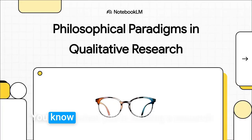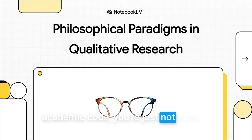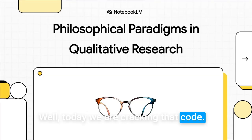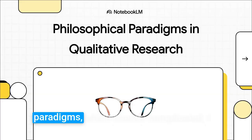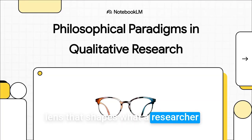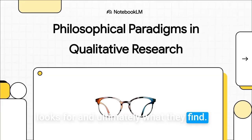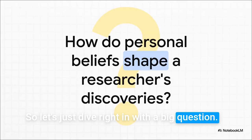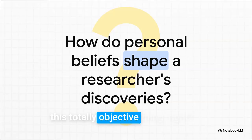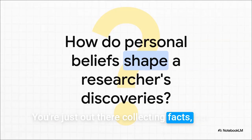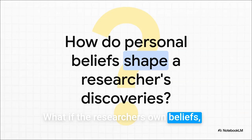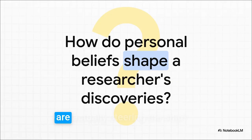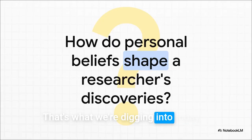Hey, welcome to The Explainer. You know when you're reading a research paper and it feels like there's this secret academic code you're just not in on? Well, today we are cracking that code. We're going to talk about philosophical paradigms, which sounds complicated, I know, but it's really just about the invisible lens that shapes what a researcher looks for and ultimately what they find. So let's just dive right in with a big question.